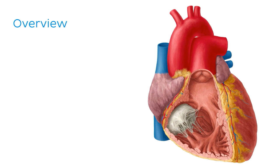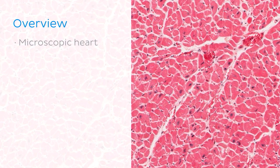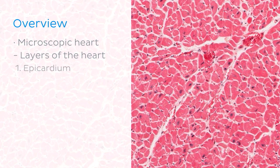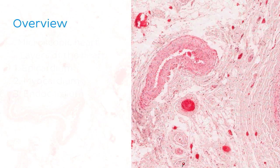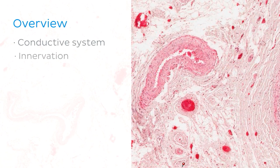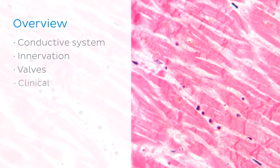To begin, we'll look at the heart on a larger scale to remind us of the gross anatomy of the heart, including the four chambers and the four heart valves. We'll then dive into the heart on a microscopic scale and look at its histological features. We'll start with the layers of the heart, including the epicardium, the myocardium, and the endocardium. We'll then look at features related to the conductive system of the heart, as well as its autonomic innervation. Next, we'll look at the valves in more detail and identify the layers that make up those structures. And finally, we'll talk about a clinical scenario that can be studied using histological slides of heart tissue.